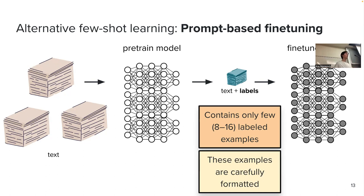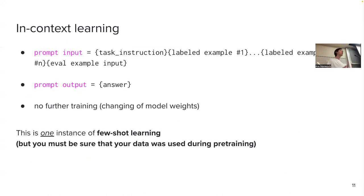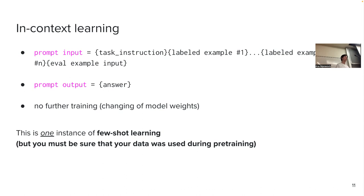What I talked about last time is the idea of not fine-tuning the model and giving it few examples in the context — we call this in-context learning. In-context learning is one instance of few-shot learning where you do not change the model weights. There is no backpropagation involved. These few examples are just part of the string, part of the prompt given to the model. When we do instruction fine-tuning, we do craft examples like this but we do backpropagation. In-context learning: no fine-tuning, no changing of weights. Instruction fine-tuning: there is fine-tuning and there is changing of weights.